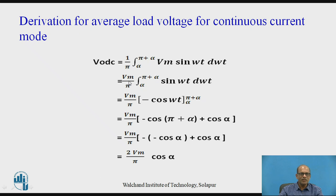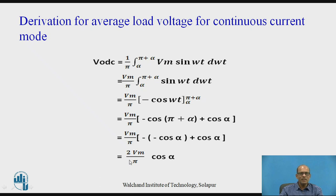This equals Vm/π times the integral from α to 2π plus α of sin(ωt) d(ωt). Putting in the limits gives minus cos(π plus α) plus cos(α), and after simplifying we get V0_dc equal to 2Vm/π times cos(α). Comparing this result with the earlier result for the full-wave controlled rectifier using a centre-tap transformer, the average load voltage for continuous current mode is the same: 2Vm/π times cos(α).